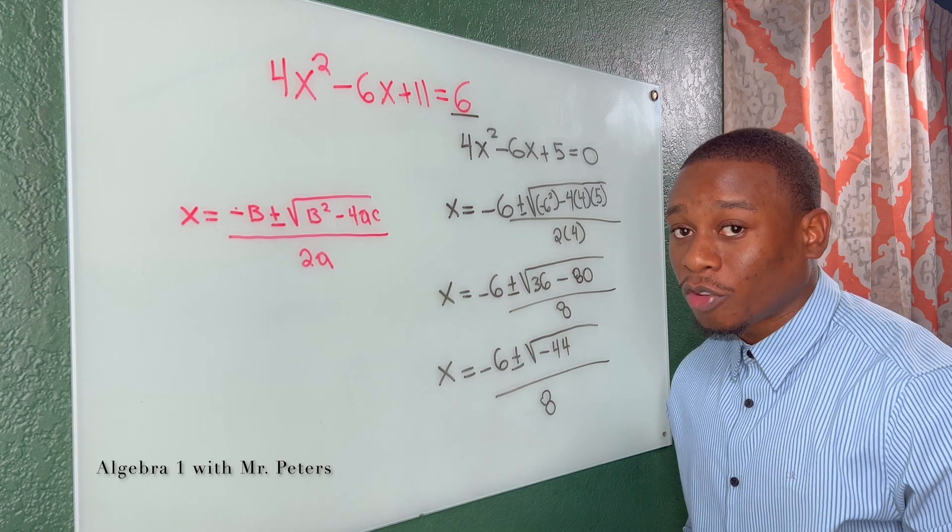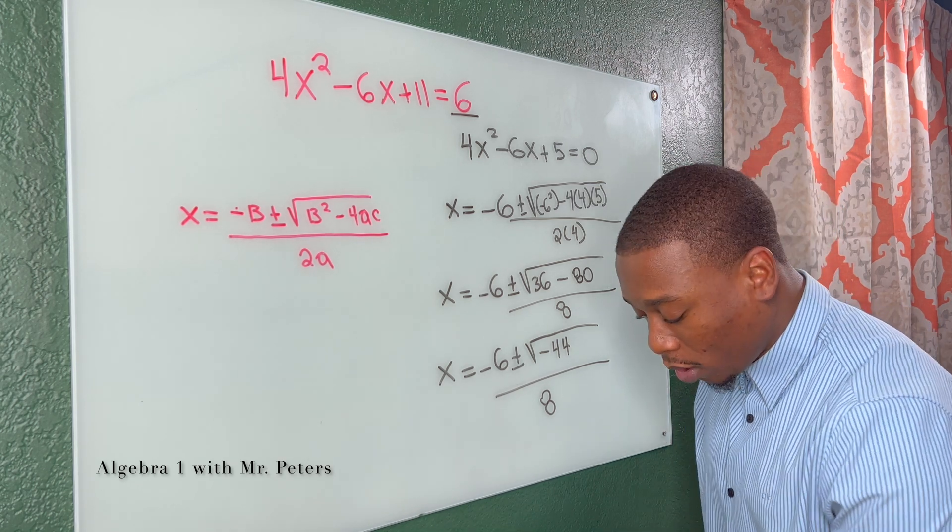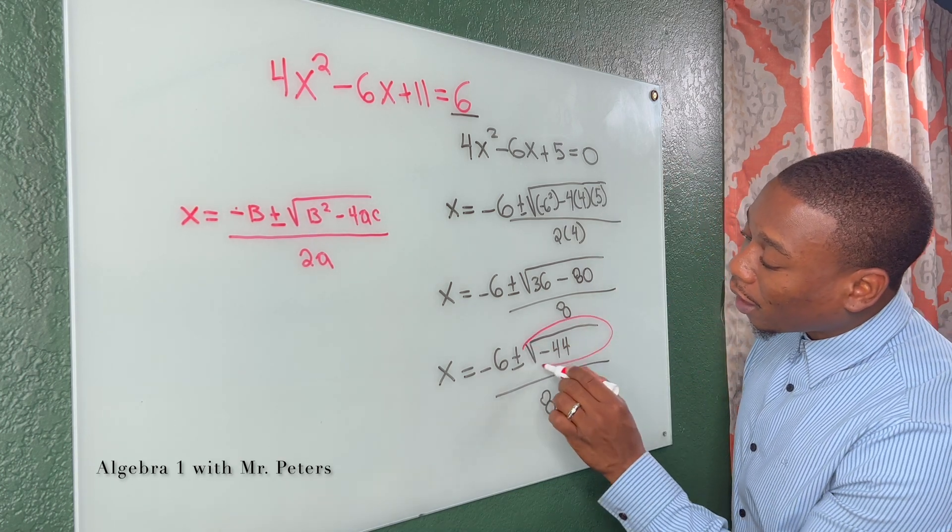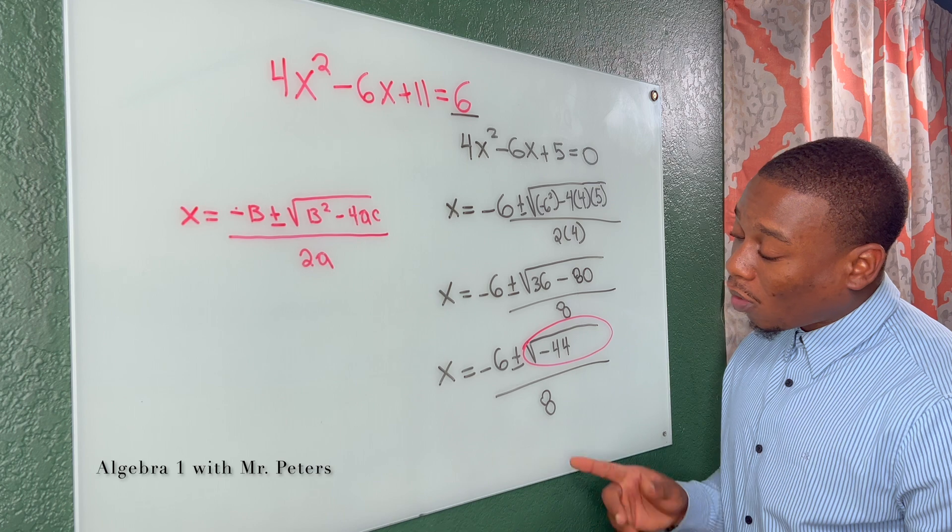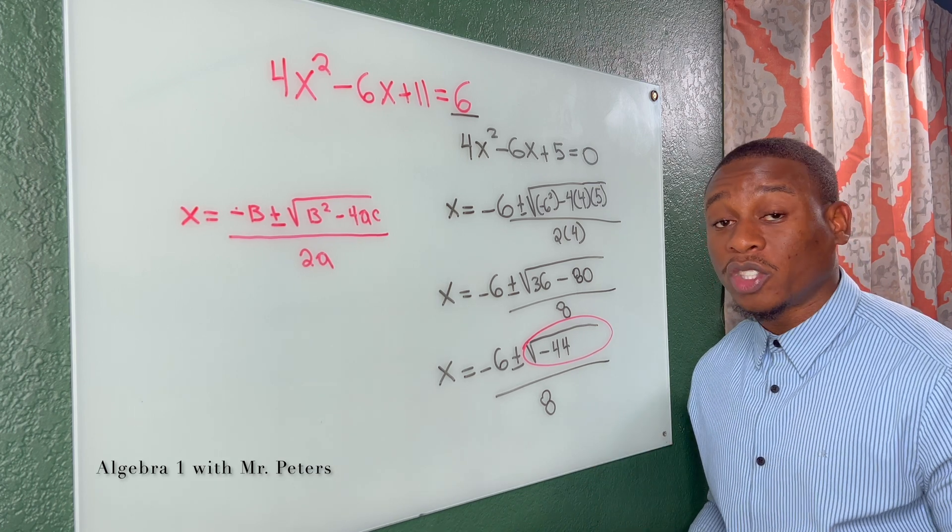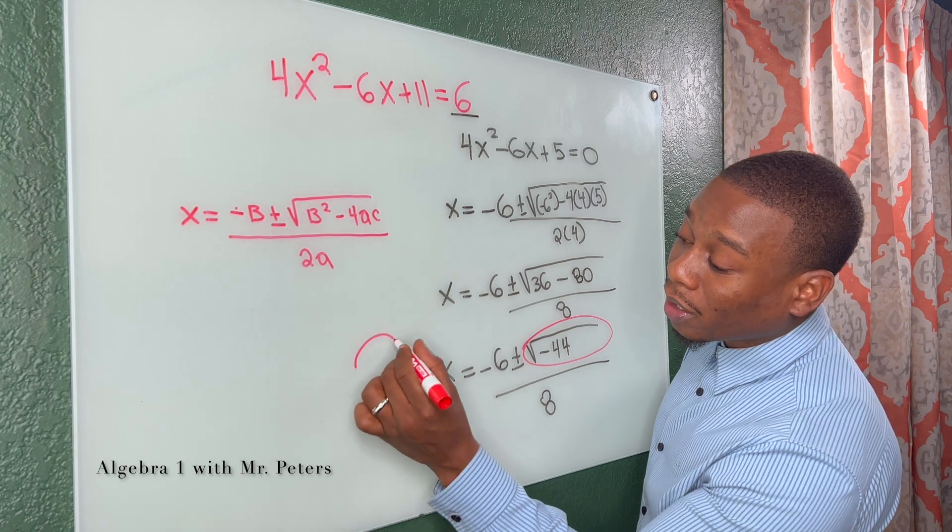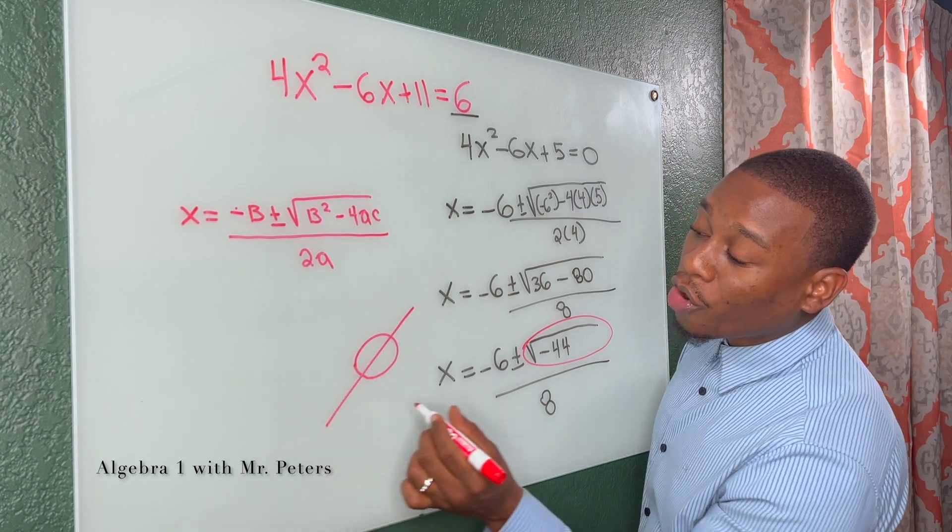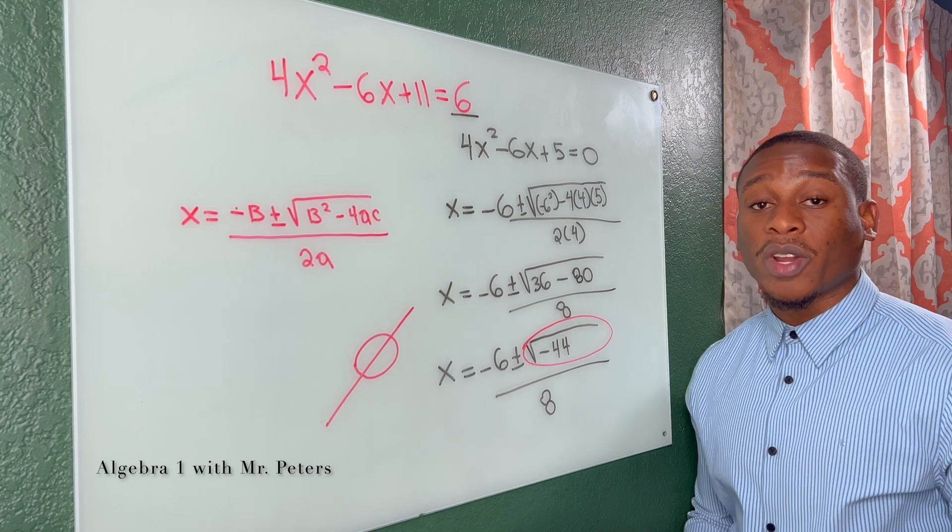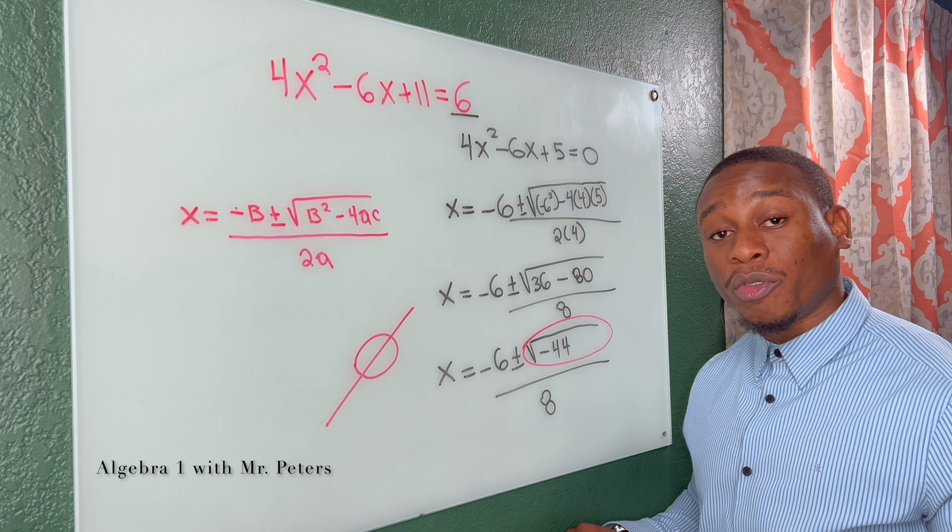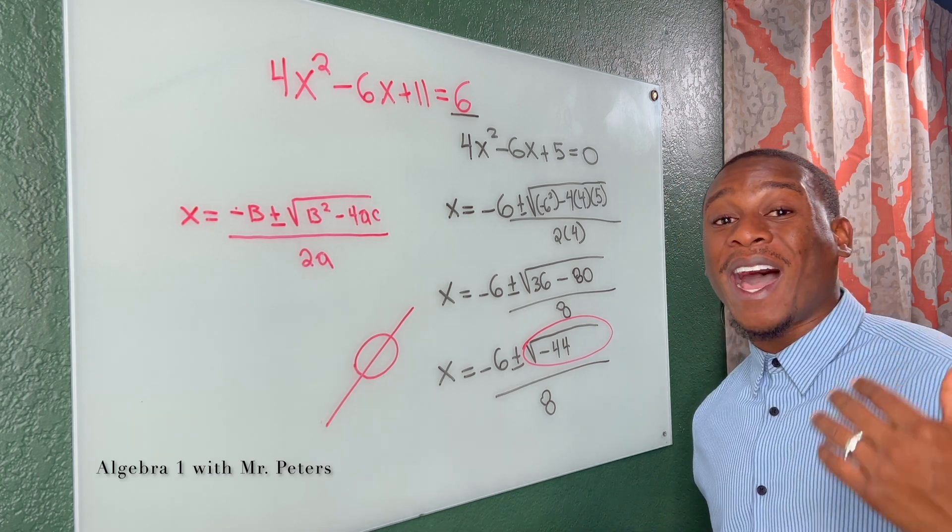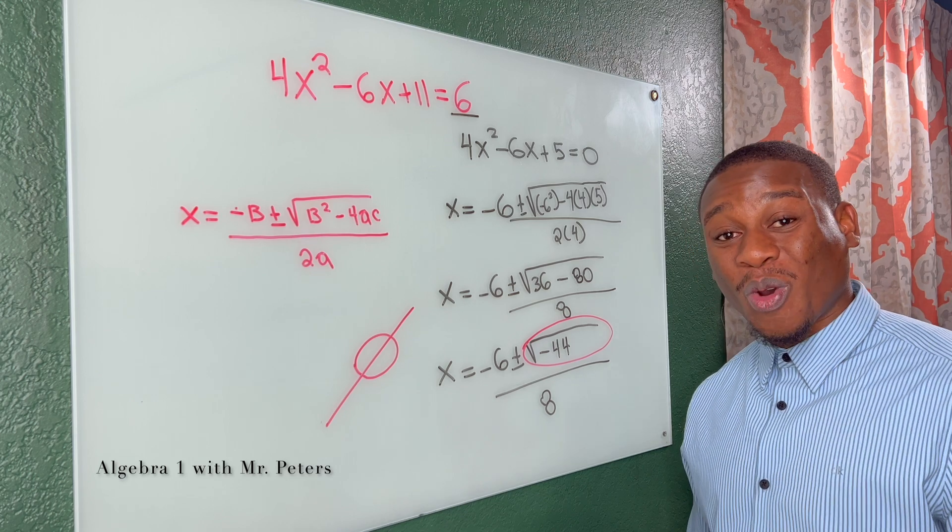Now you probably caught it already, but guys, remember we cannot go any further with this problem in algebra one. Why? We cannot take the square root of a negative number. So right here at this point, we would stop trying to solve this quadratic formula on a quiz and we would understand that there are no real solutions to this quadratic formula. We would only have imaginary roots or numbers. So this is the last trick that I wanted to show you on how and when to use the quadratic formula.